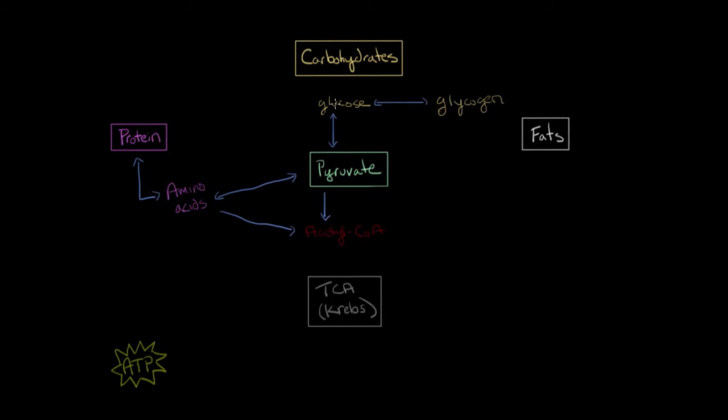Glycogen can be broken down into glucose, and then through pyruvate it can become amino acids and then stored as protein. So let's see how this works for fats.